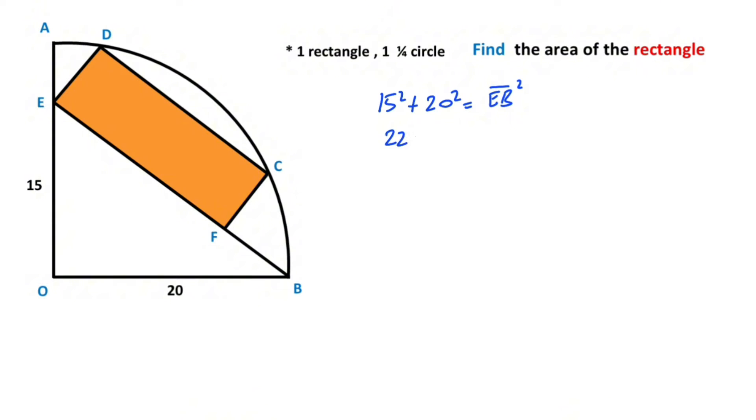Therefore, 225 plus 400 equals EB squared. So 625 equals EB squared. Let's square root both sides of the equation. We get EB as 25.